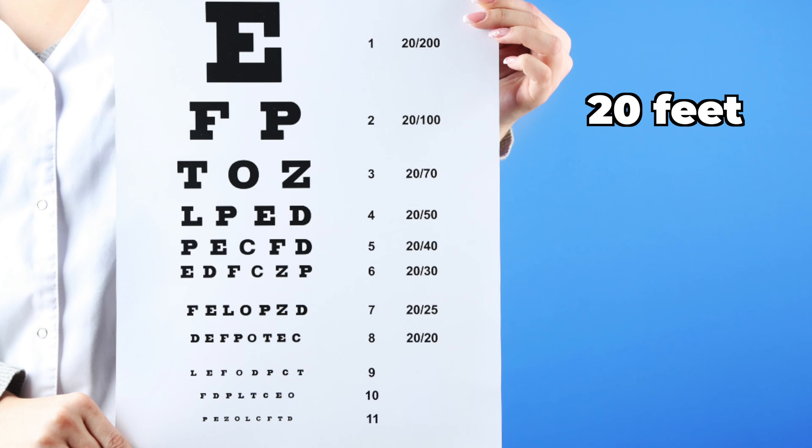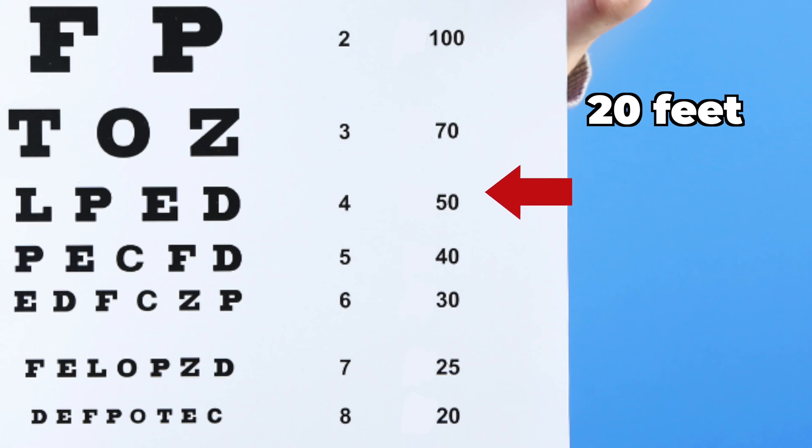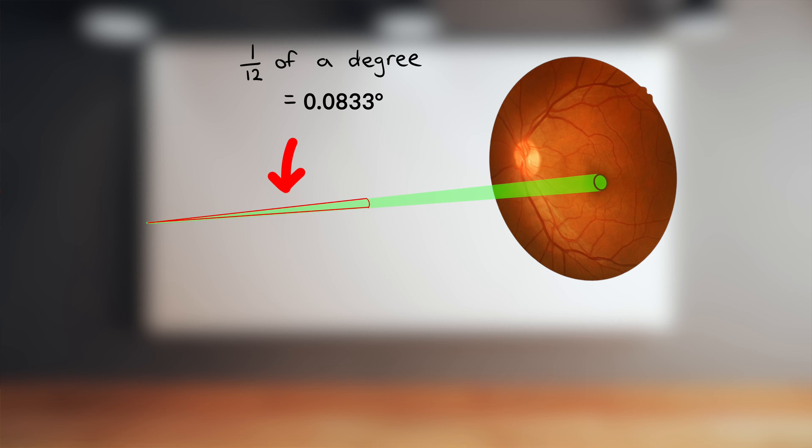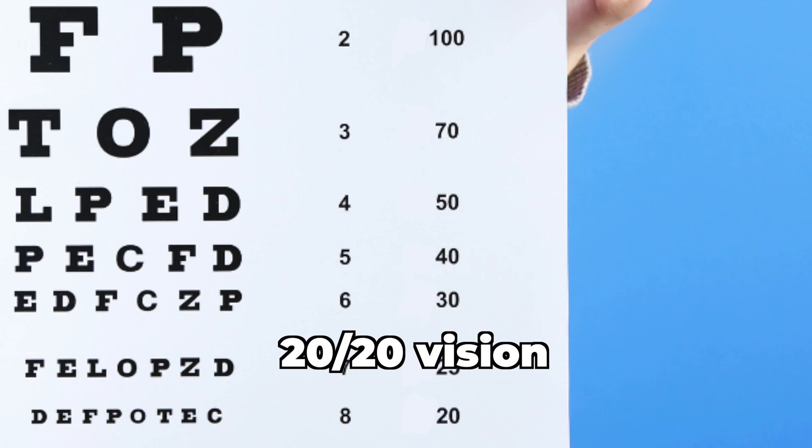At a distance of 20 feet, if you are able to read down to the letter size 20 on a vision chart that takes up one twelfth of a degree in your visual field, then congratulations, you have 20-20 vision.